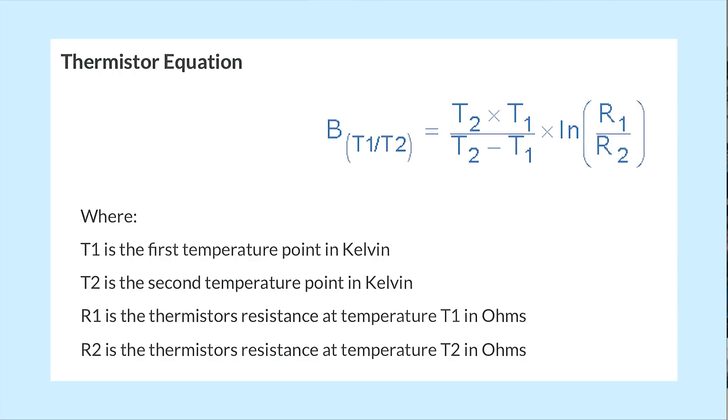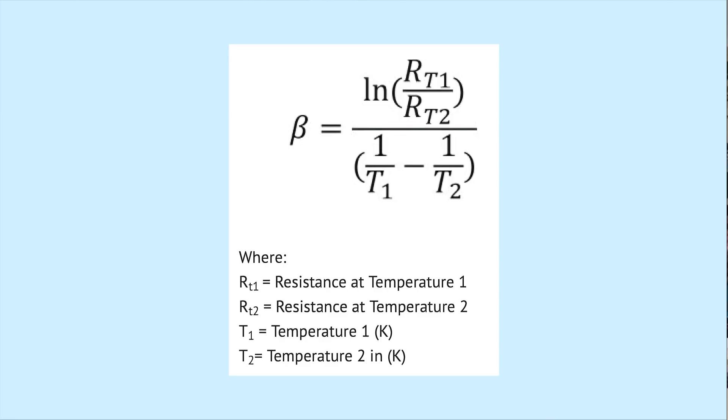While thermistors don't have a linear change, this equation can be used to calculate the curve of NTC thermistors. The beta value is calculated using the readings at two temperatures, with temperature measured in Kelvin.